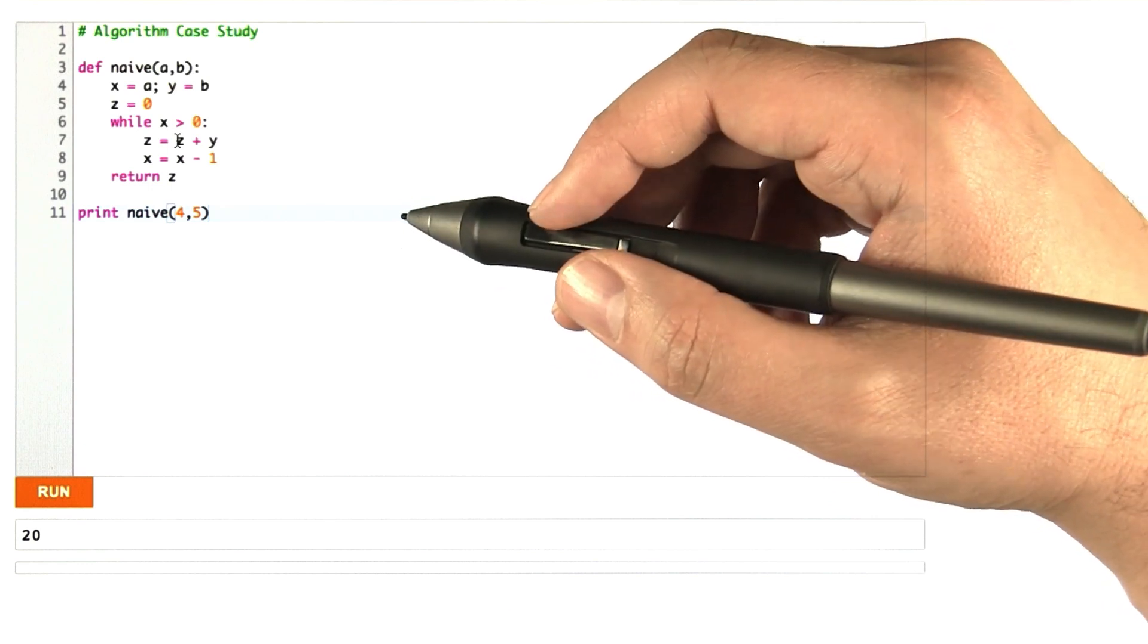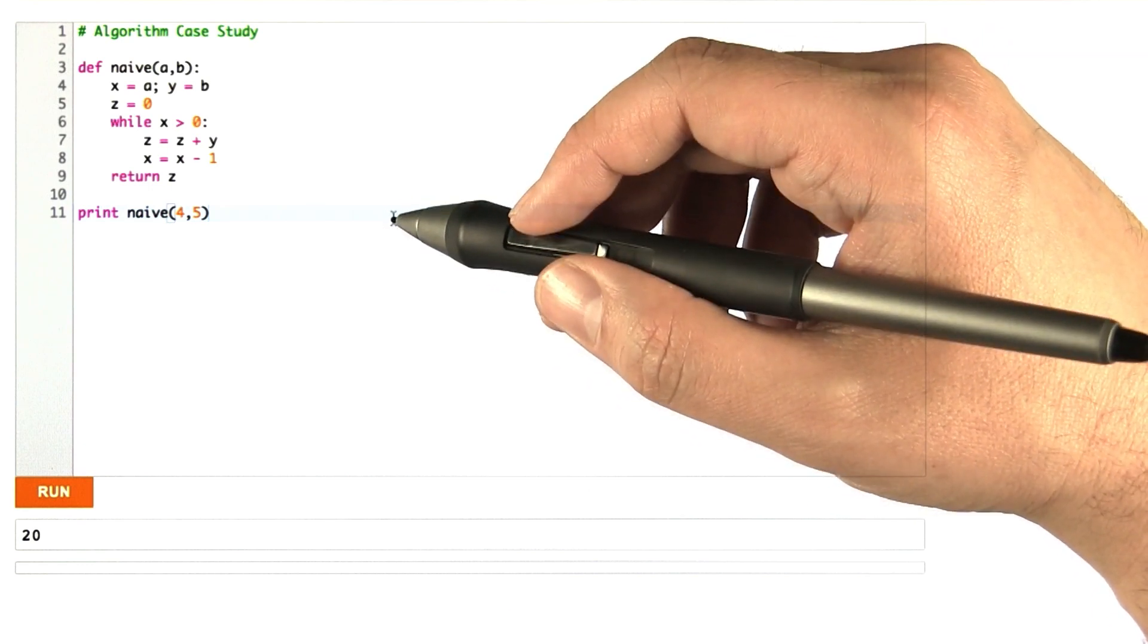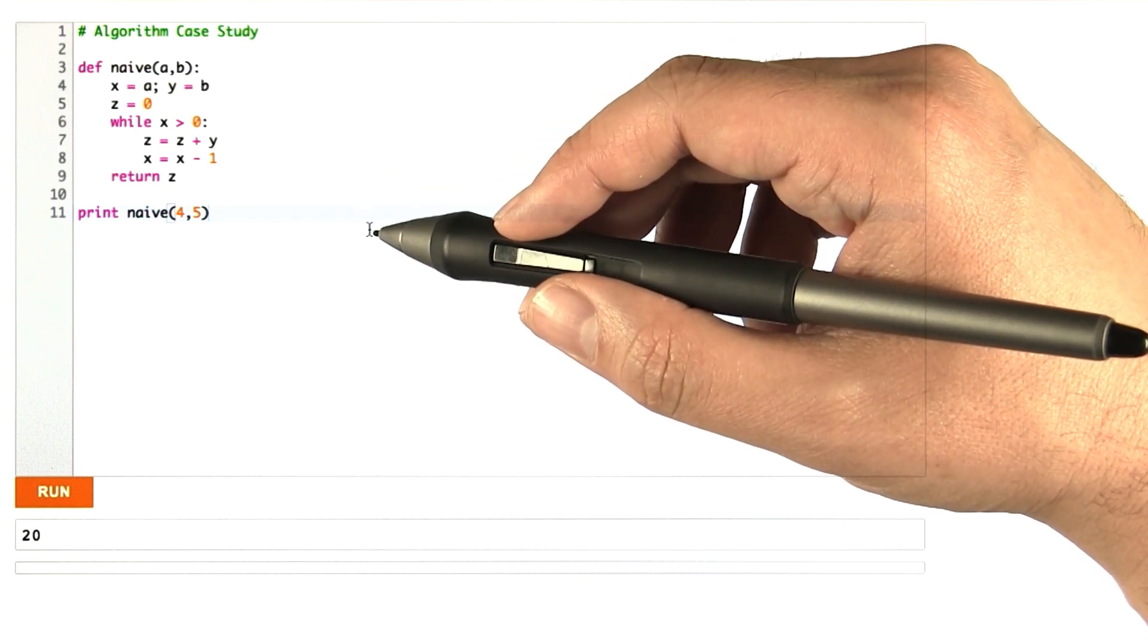Now that was kind of an informal argument. Can we be a little bit more formal and mathematical to show why it is that what this is computing is the product of a and b?